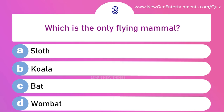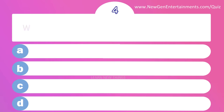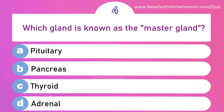Which is the only flying mammal? Options are: A) Sloth, B) Koala, C) Bat, and D) Worm bat. Answer is option C: Bat.